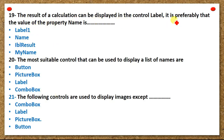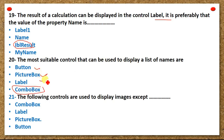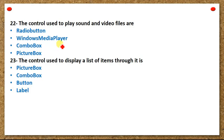Nineteen — the result of a calculation can be displayed in the control label; it is preferable that the value of the property name is: Label1, name, or result. Twenty — the most suitable control to display a list of names is: button, picture box, label, or combo box. Twenty-one — the following controls are used to display images except: combo box, label, picture box, or button. Twenty-two — the control used to play sound and video files is: radio button, Windows Media Player, combo box, or picture box. Twenty-three — the control used to display a list of items is: picture box, combo box, button, or label.